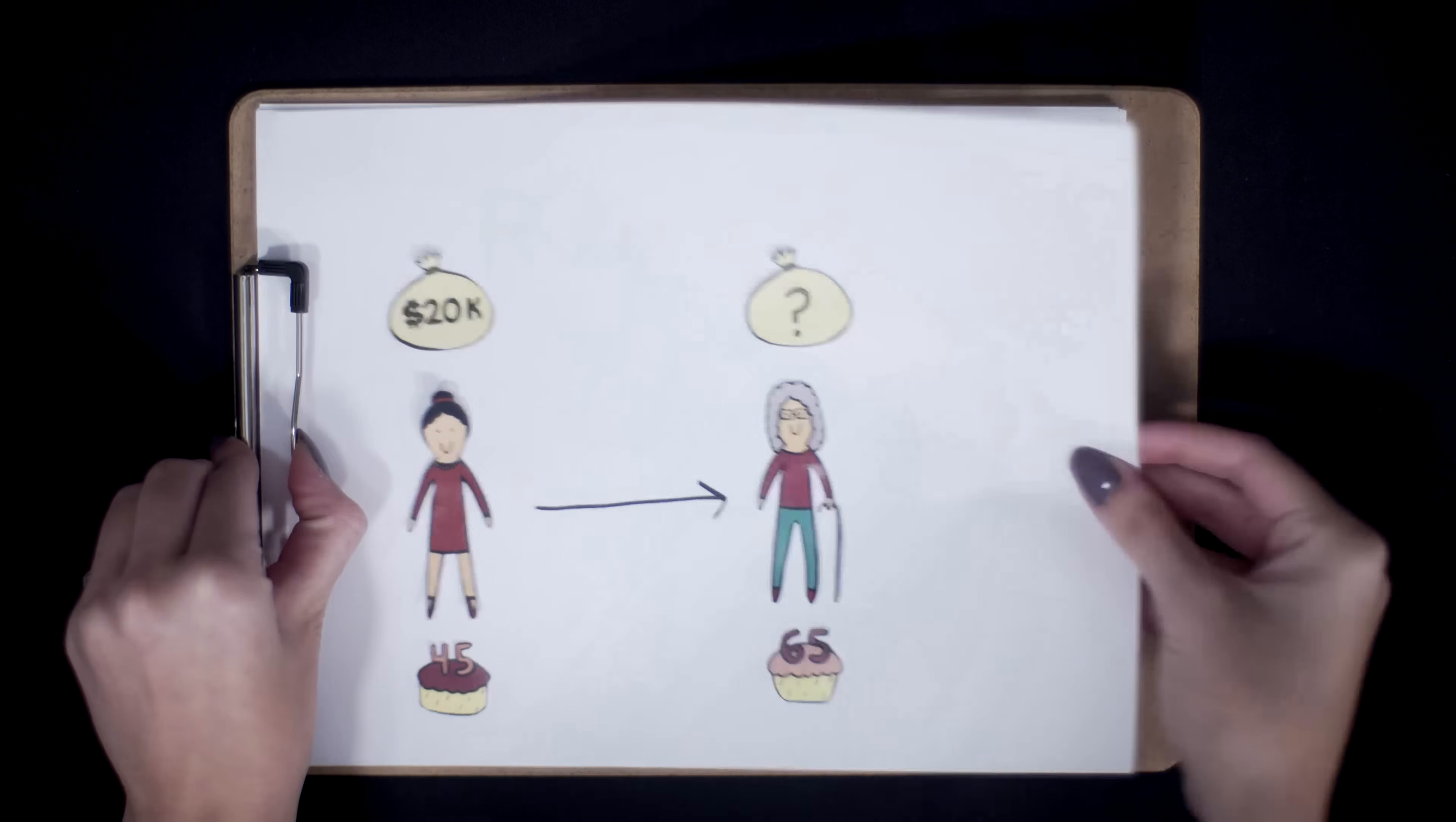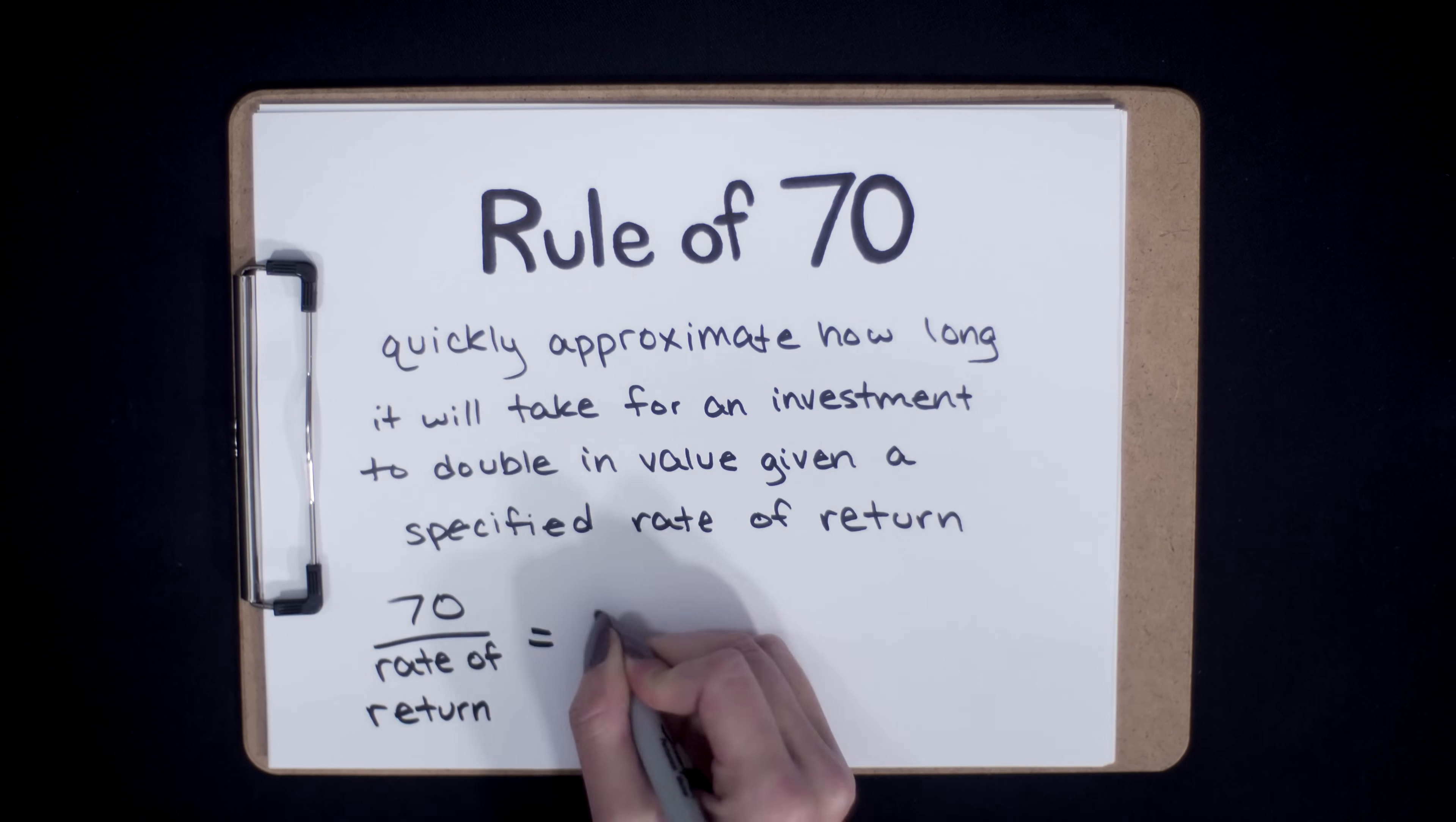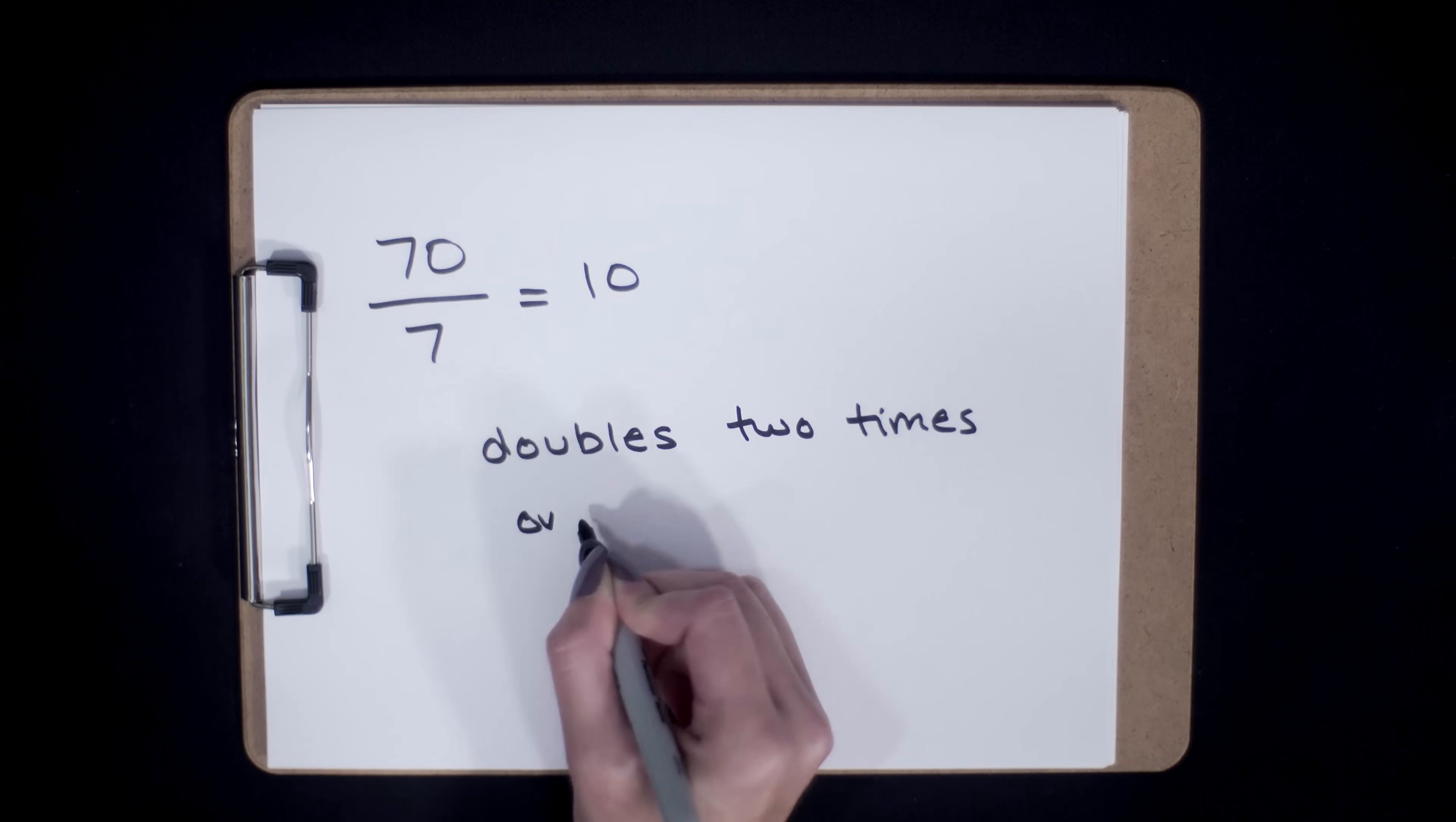For simplicity, we'll use the rule of 70, which allows you to quickly approximate how long it will take for an investment to double in value given a specified rate of return. To see how many times Myopic Mary's $20,000 will double, simply divide 70 by the rate of return. So 70 divided by a rate of return of 7 equals 10, which means her money doubles approximately once every 10 years.